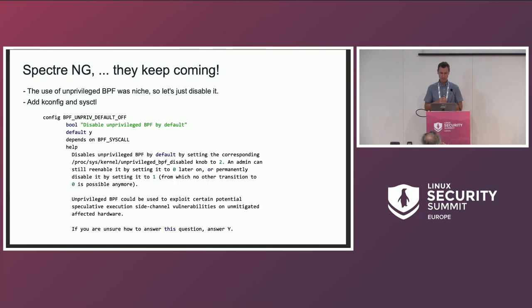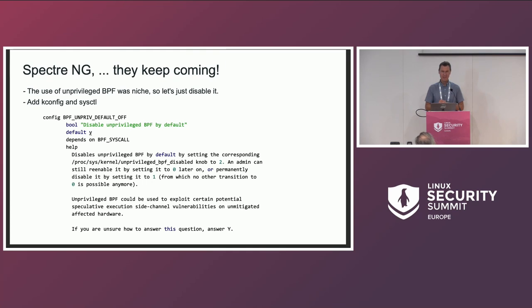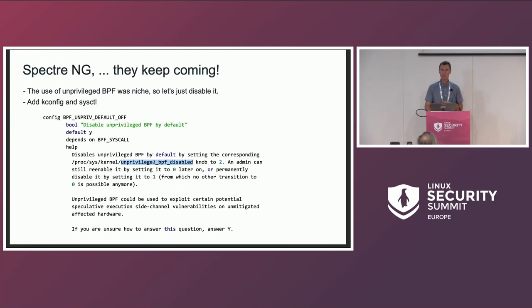So what we did was add this BPF unprivileged_default-off sysctl. The important part is the default is Y — disabled. So every distro, every kernel from that point on, completely disables unprivileged BPF. You can still turn it on with a sysctl knob for people who don't care about security. But the recommendation is to turn it off. That's been the case for five-plus years now. So we let security researchers in the speculative execution space use something else — we're tired of BPF always being in the spotlight of security research.